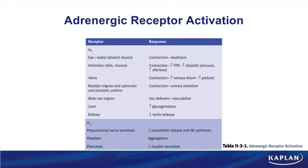Now let's look at the table listing different adrenergic receptors, starting with alpha-1. Alpha-1 receptors are found in lots of places — one of the most common adrenergic receptors. The first organ to focus on is the eye. Stimulating alpha-1s in the eye stimulates the radial muscle to contract, leading to mydriasis.